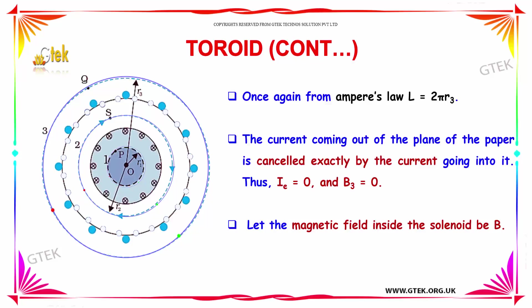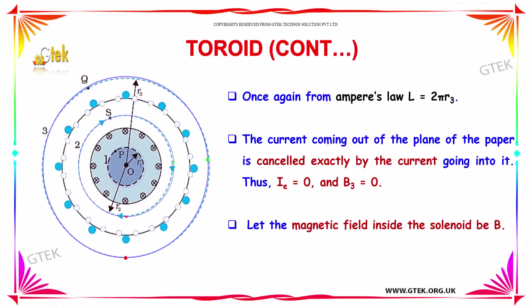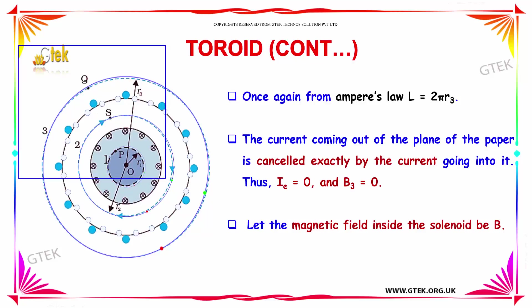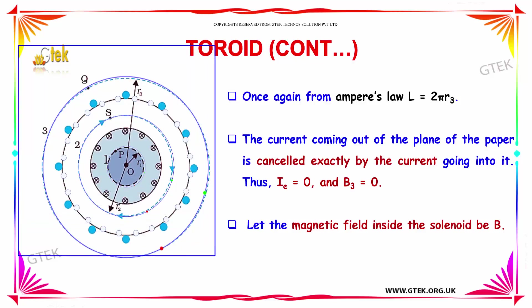From Ampere's law for loop 3, L is equal to 2π R3, where R3 is the radius of loop 3. The current coming out from the plane of the paper is cancelled exactly by the current going in, so the enclosed current IE equals 0. Therefore B3 is equal to 0.